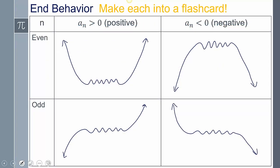Just to remind you, end behavior is based upon the leading coefficient and the degree, which is that highest exponent. We were able to predict basically where our function is going, whether it's both going up or both going down. We talked about this more yesterday and we have to have that memorized.